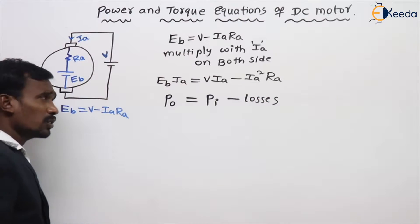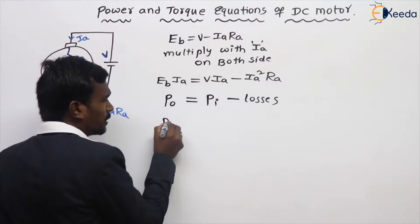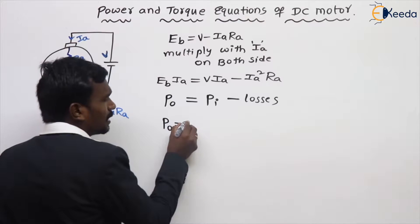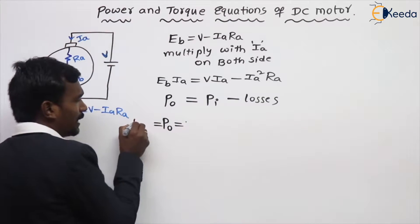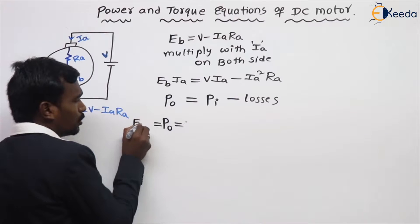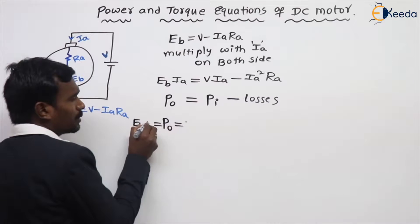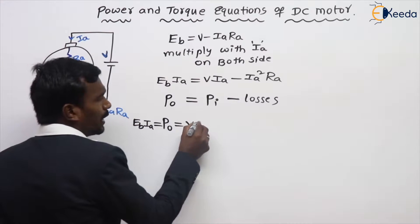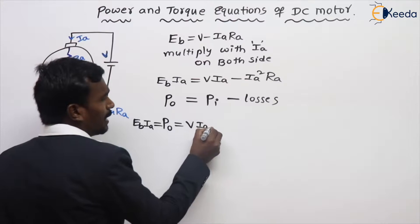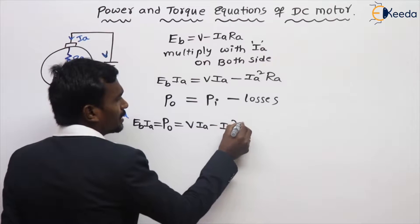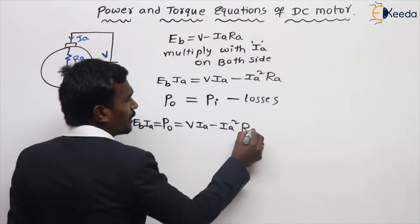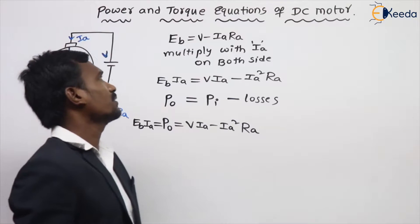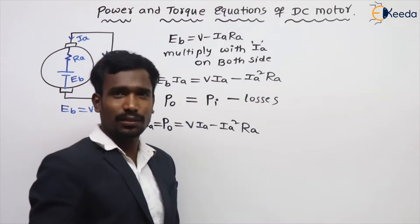So the power output, that is EB into IA, you should remember this one — very important — that is V IA minus IA squared RA. This is the power output of the DC motor.